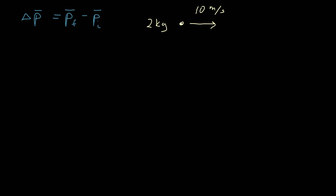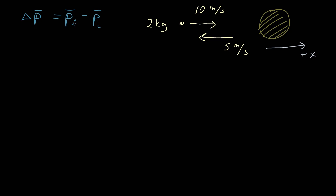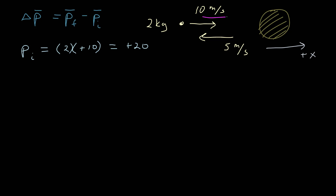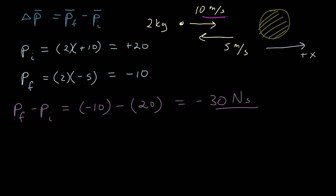Let's take a look at this example. I have a ball of two kilograms going at ten meters per second, and it hits a really huge ball and starts reflecting backwards at five meters per second. What is the change in momentum of this ball? First we need a coordinate system — positive to the right. The initial momentum is two kilograms times positive ten meters per second, giving a momentum of twenty. The final momentum is going in the opposite direction: two times negative five meters per second, giving negative ten kilograms meters per second. Taking p final minus p initial: negative ten minus twenty gives a change in momentum of negative thirty newton seconds.